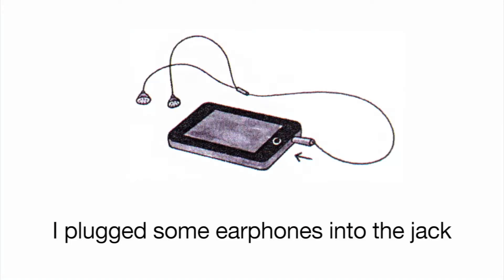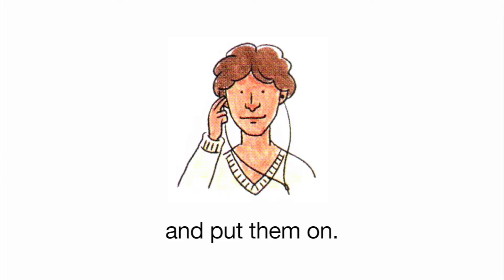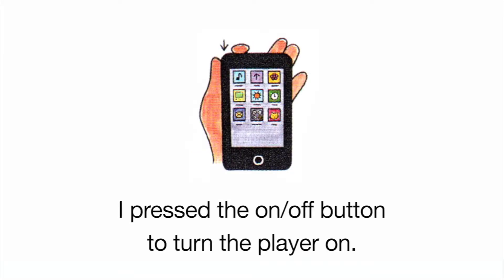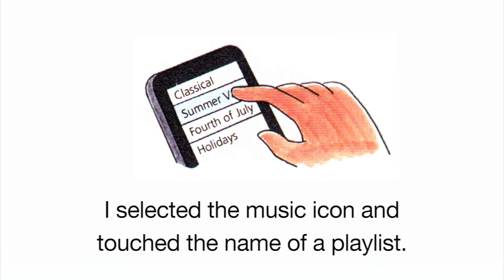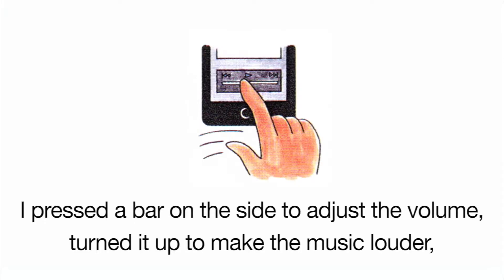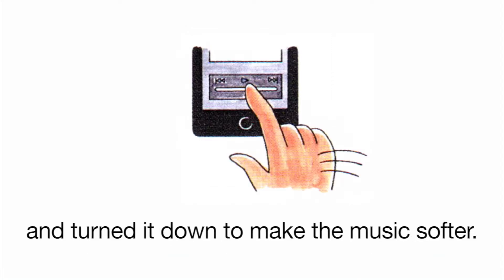I plugged some earphones into the jack and put them on. I pressed the On-Off button to turn the player on. I selected the music icon and touched the name of a playlist. I pressed a bar on the side to adjust the volume, turned it up to make the music louder, and turned it down to make the music softer.